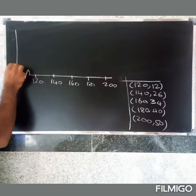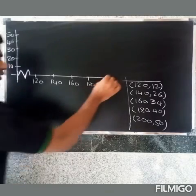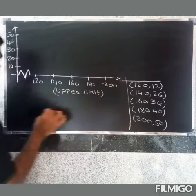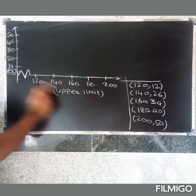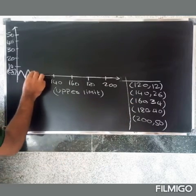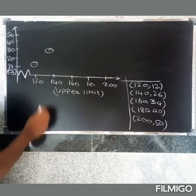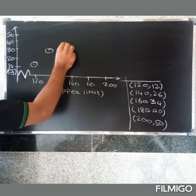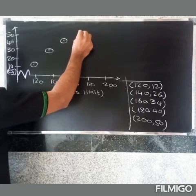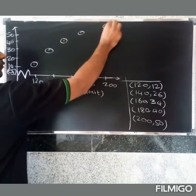On the graph, mark values 10, 20, 30, 40, 50 on the cumulative frequency axis. Look at the upper limit and the cumulative frequency CF. Plot: 120 comma 12, 140 comma 26, 160 comma 34, 180 comma 40, and 200 comma 50 approximately on the graph.